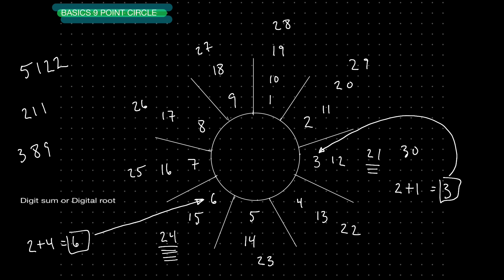So what spoke of the wheel is 211 going to land on? I simply add the numbers together: 2 plus 1 plus 1 gives me 4. So I know the number 211 is going to land on spoke number 4. It's going to land on this spoke here, so I can go ahead and write that in — 211.